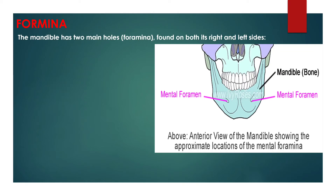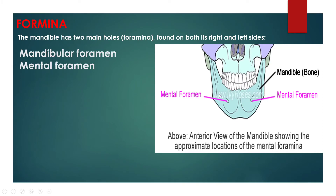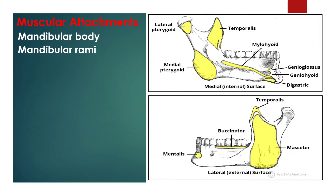The mandible has two main foramina found on both its right and left side. The mandibular foramen is above the mandibular angle on the medial surface of each ramus. The mental foramen is situated on either side of the mental protuberance on the body of the mandible, usually inferior to the apices of the mandibular first and second premolars. As mandibular growth proceeds in young children, the mental foramen alters the direction of its opening from anterior to posterosuperior. The mental foramen allows entrance of the mental nerves and blood vessels into the mandibular canal.